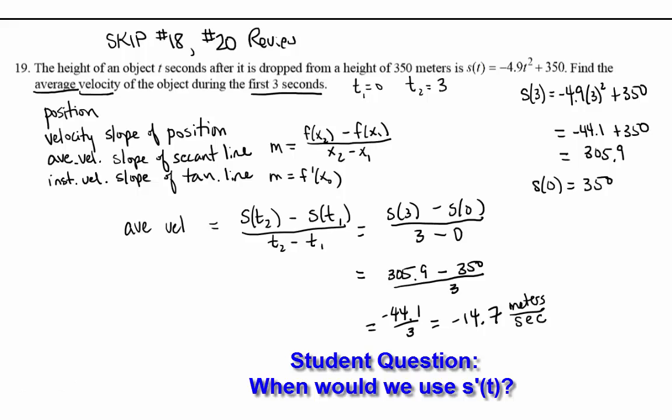So for example, if I said, what's the instantaneous velocity of the object at three seconds? You would take the derivative of the position function and plug in three.